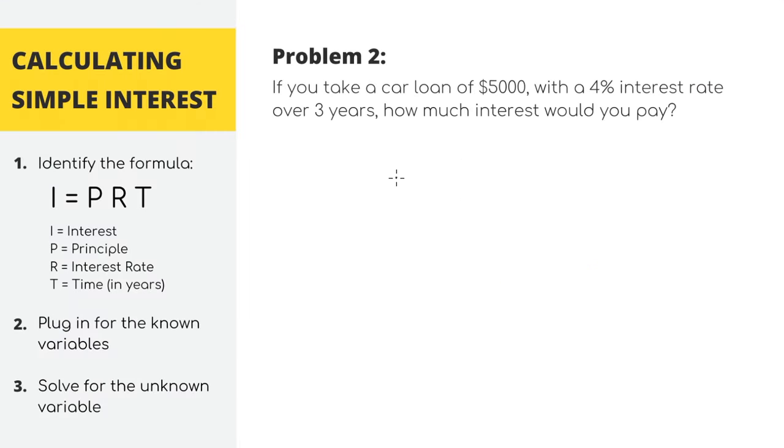Fortunately, and also unfortunately, depending on how you look at it, this same formula works when you borrow money too. Let's say you really want to buy a car for $5,000, but you don't have the money right now, so you take out a loan. By taking out a loan, you are borrowing money from the bank. So the bank says, okay, you can borrow my money, but you have to pay me a 4% interest rate, and take your time, pay me back over the span of three years. 4% doesn't sound like that much, and you have some time to pay it back, but let's actually calculate how much extra you have to pay in interest over these three years.